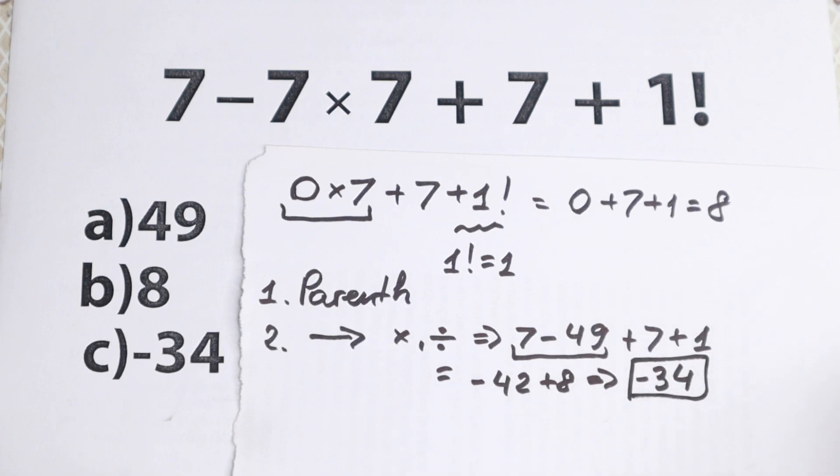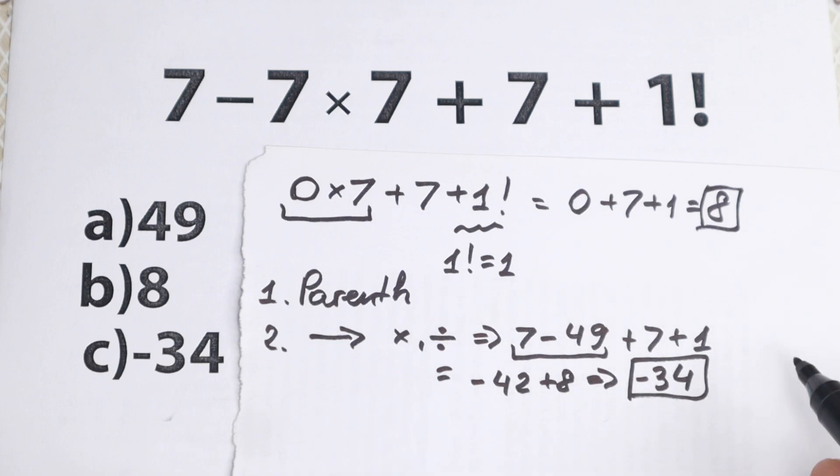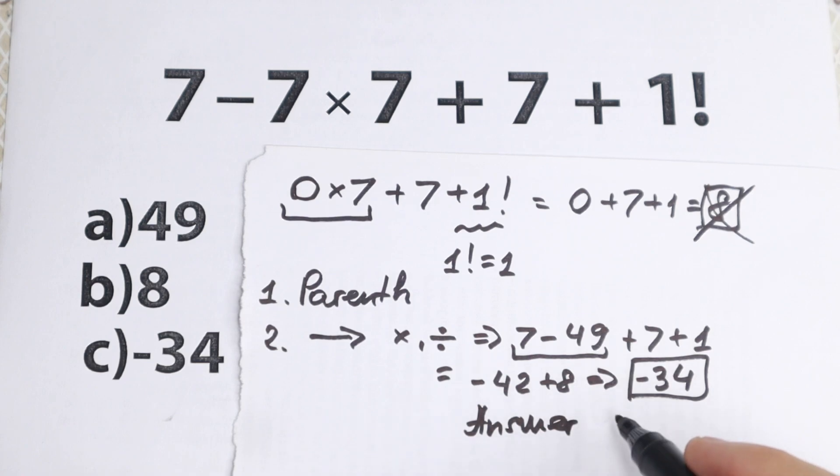So as you can see our answer is -34 and a lot of students do this mistake. They say that the answer is 8. So as you can see, 8 is incorrect answer. And as you can see, our answer is this question equal to minus 34 option, option c.